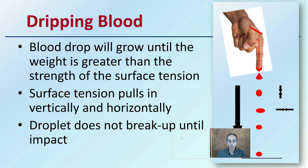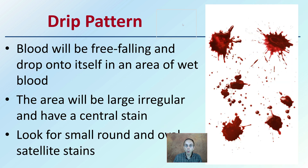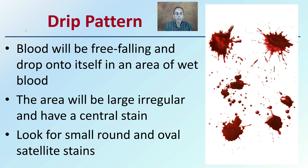Dripping blood, just in general: a blood drop will grow until the weight is greater than the strength of the surface tension. Surface tension pulls in vertically and horizontally, and the droplet does not break apart until the point of impact. We see a cut at the end of the finger dropping down, with surface tension holding that droplet together, breaking apart only when it reaches the surface. That will lead to a drip pattern.